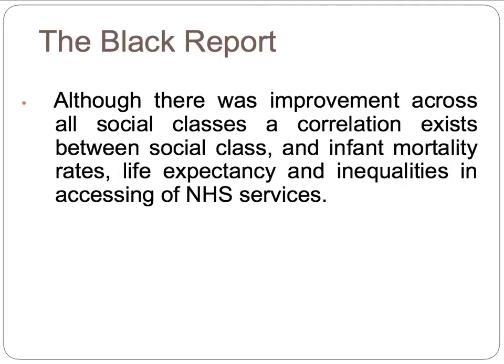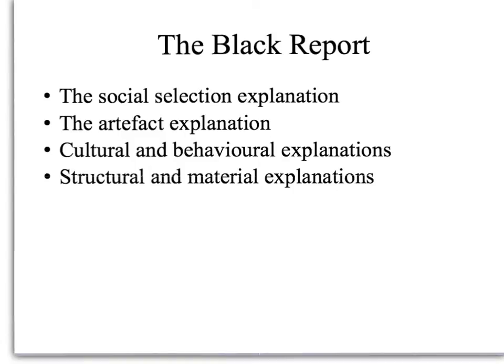Although the Black Report found improvement across all social classes, it also found correlations between social class and infant mortality rates, life expectancy, and inequalities in accessing NHS services. At all ages, lower social classes — measured by occupation — experience higher mortality rates for almost all causes of death. The first of four explanations offered is the social selection explanation: the view that illness is not the result of low income and poverty but the causes of them, as healthy people are more likely to be upwardly mobile while those who are ill become downwardly mobile.